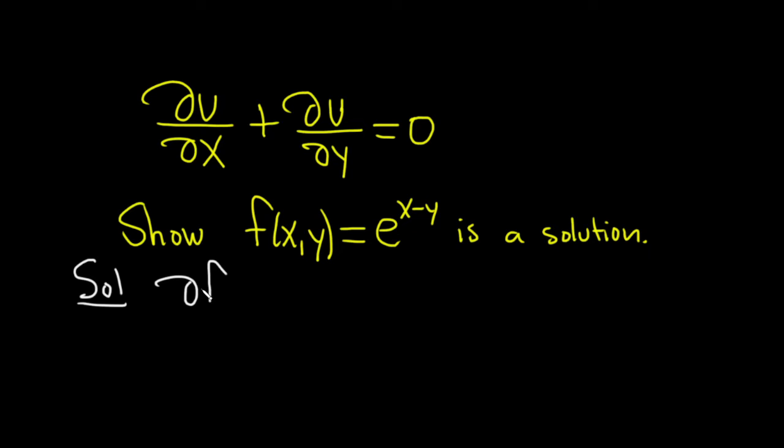Let's compute ∂f/∂x. This is the partial with respect to x. When we do that, we treat all other variables as constants. So in this case, we're treating y as the constant, and we're going to use the chain rule.